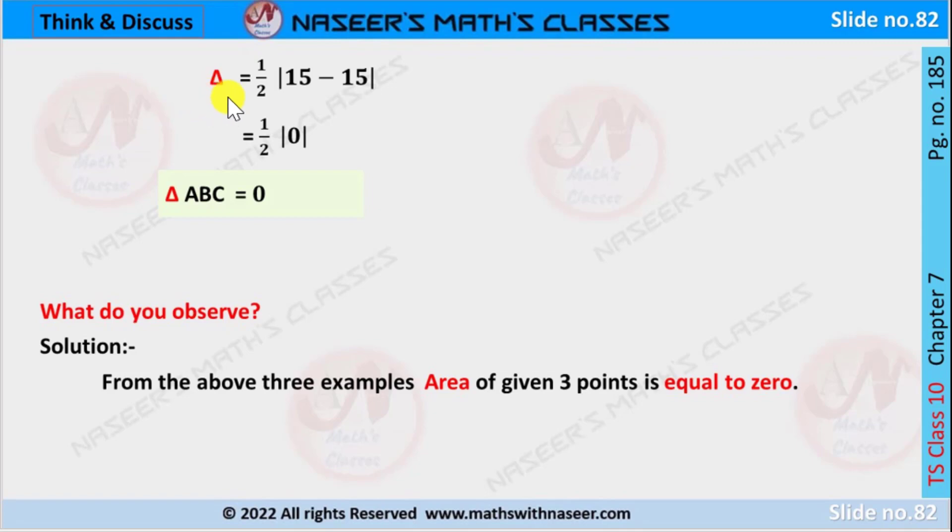After simplification, our equation is written as delta equals 1 by 2 mod 15 minus 15. Here 15 minus 15 is 0, mod 0 is 0, then 1 by 2 into 0 is 0.